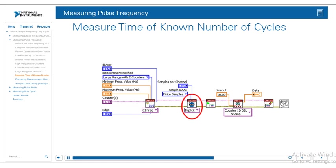We're also going to use the DAQmx Timing VI. Again, we're going to use implicit timing for finite samples, making this a buffered measurement. We'll go ahead and use start, read, clear, and then check for errors — just to make sure we are starting the task, reading, clearing the task, and checking that there are no errors on the signal.